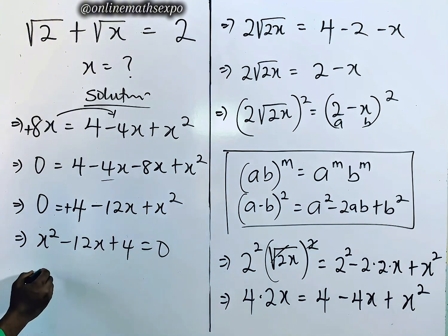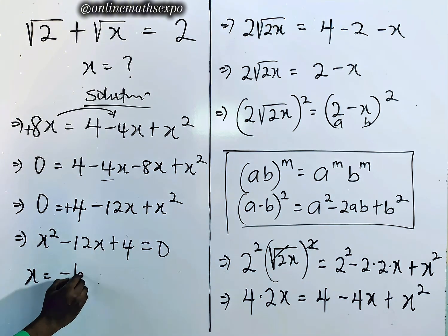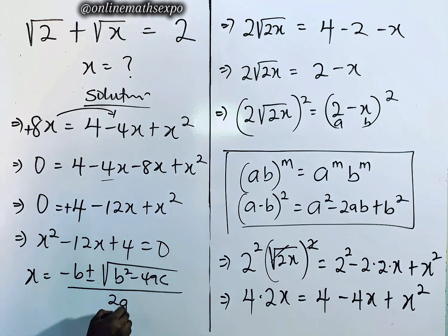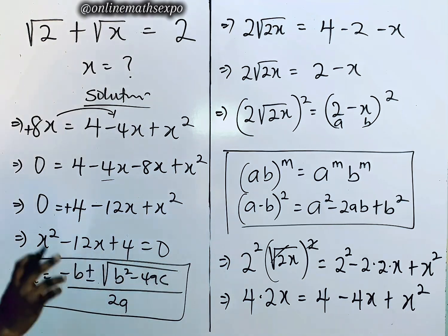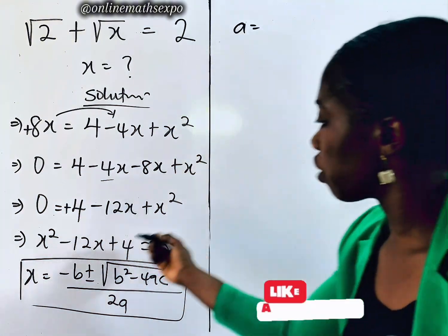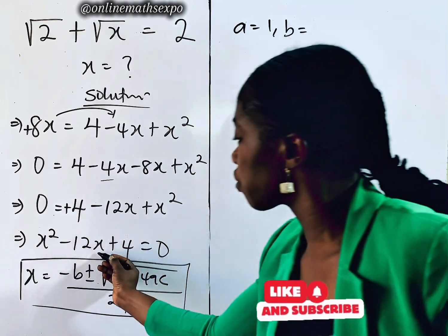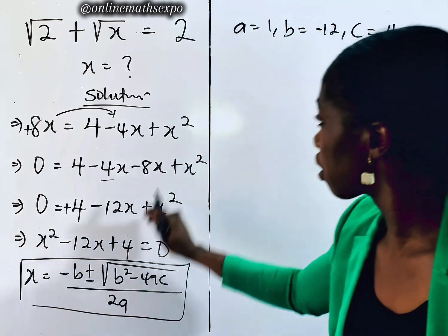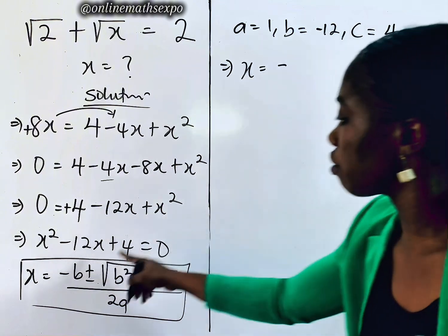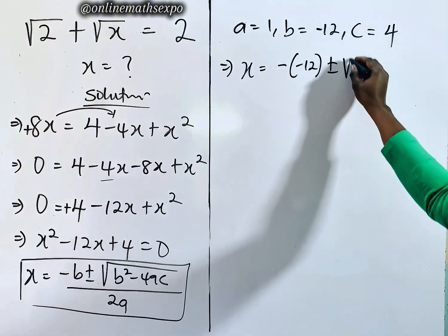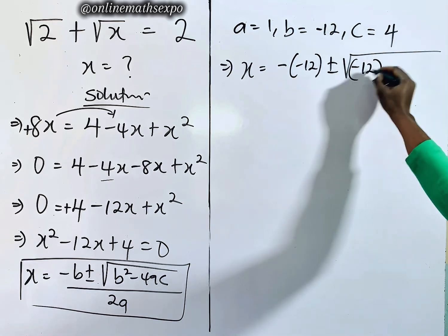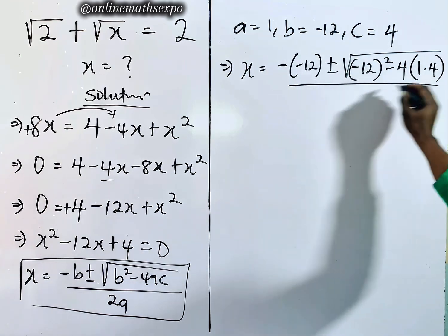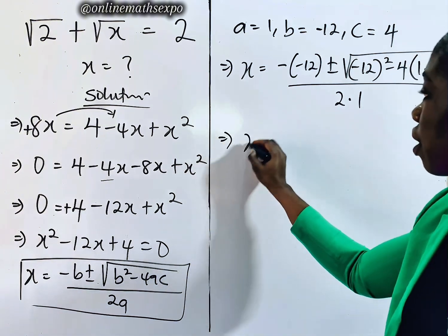At this point let's use the quadratic formula: x = (−b ± √(b² − 4ac)) / 2a. Here, a is the coefficient of x² which is 1, b is the coefficient of x which is −12, and c is 4. Plugging in: x = (−(−12) ± √((−12)² − 4·1·4)) / (2·1).